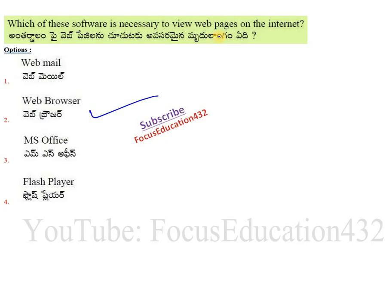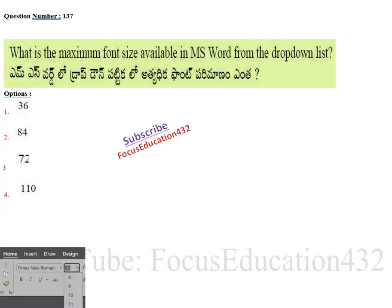Next question: which software is necessary to view web pages on the internet? If you open a newspaper website or any website, which software do you need? The options are webmail, browser, office, or flash. The correct answer is web browser. For example, Google Chrome is an example of a web browser, as are Internet Explorer, Edge, and Mozilla Firefox.